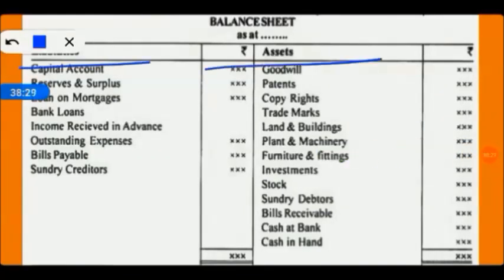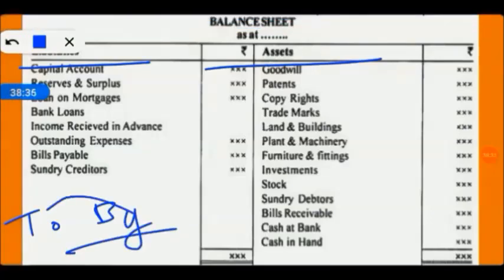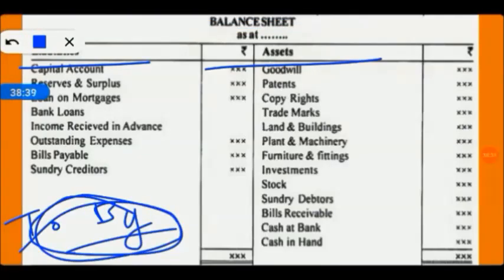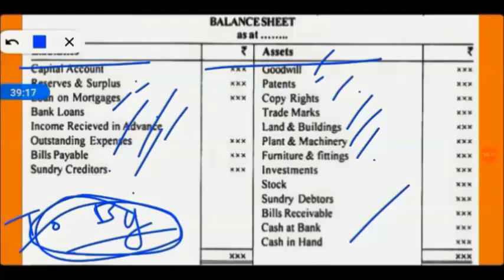The balance sheet has liabilities and assets. Remember that unlike accounts, the balance sheet is a statement — we don't use 'to' and 'by'. We can enter items such as goodwill, patents, copyrights, trademarks, building, plant and machinery, furniture, investment, and stock on the assets side. On the liabilities side come capital, reserves, loans, mortgages, bank loans, income received in advance, outstanding expenses, bills payable, creditors, and debtors.